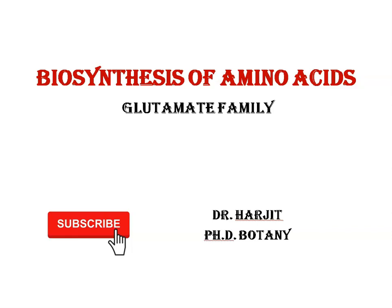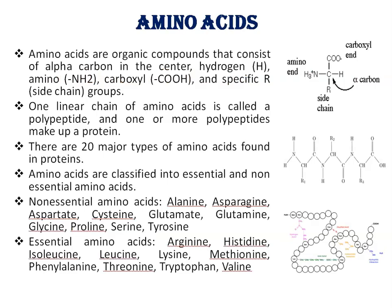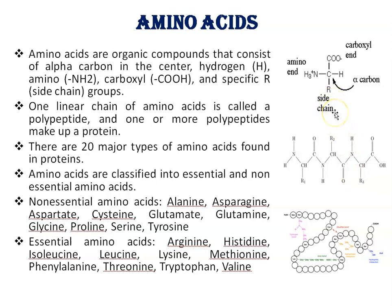We are going to talk about biosynthesis of amino acids, and in this lecture we will discuss biosynthesis of the glutamate family. Amino acids are organic compounds that consist of an alpha carbon in the center, hydrogen, an amino group, a carboxylic group, and a specific R group side chain. One linear chain of amino acids is called a polypeptide, and one or more polypeptides make a protein. There are 20 major types of amino acids found in proteins, which differ in their side chain.